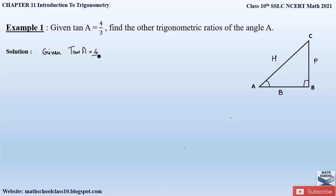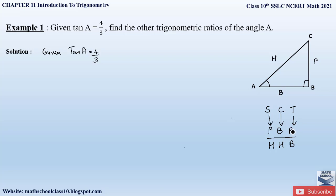We have to find sin A, cos A, cot, secant, and cosecant A. In my previous video I explained the simplest way to remember the trigonometric ratios: sine, cos, and tan are defined by P, B, H — sine θ is perpendicular by hypotenuse, cos θ is base by hypotenuse, and tan θ is perpendicular by base. Similarly, cosecant θ is hypotenuse by perpendicular, secant θ is hypotenuse by base, and cot θ is base by perpendicular.